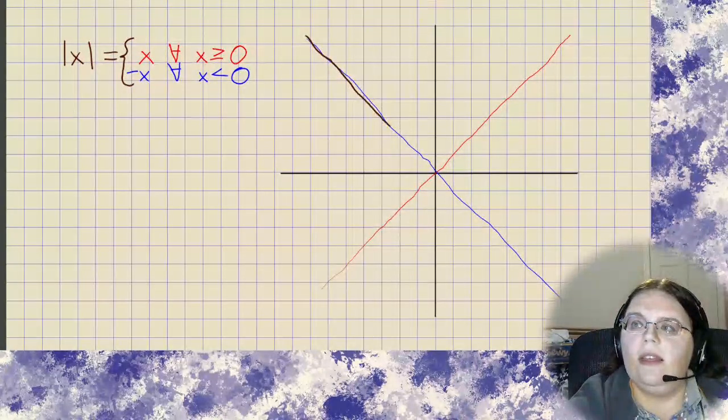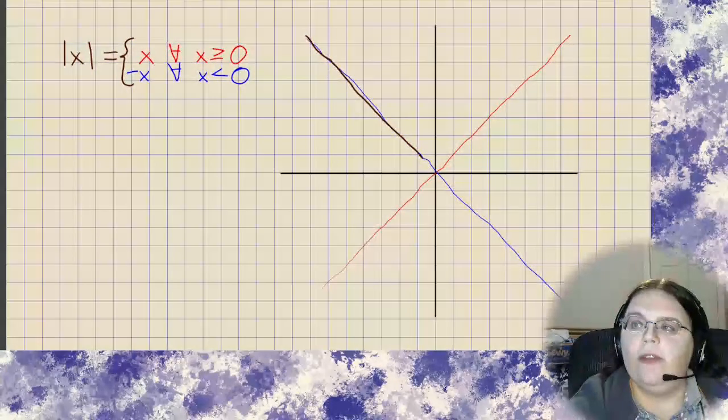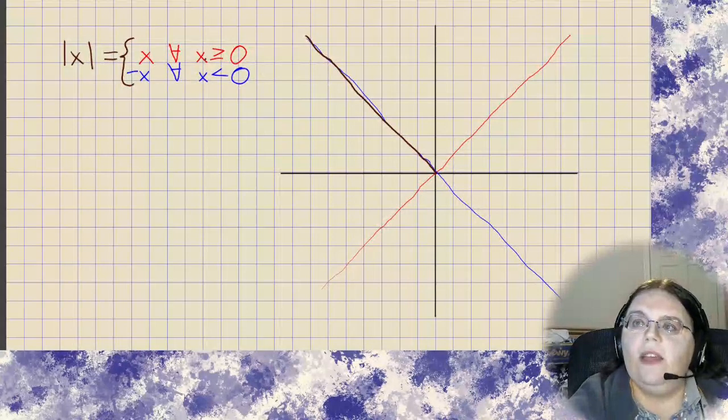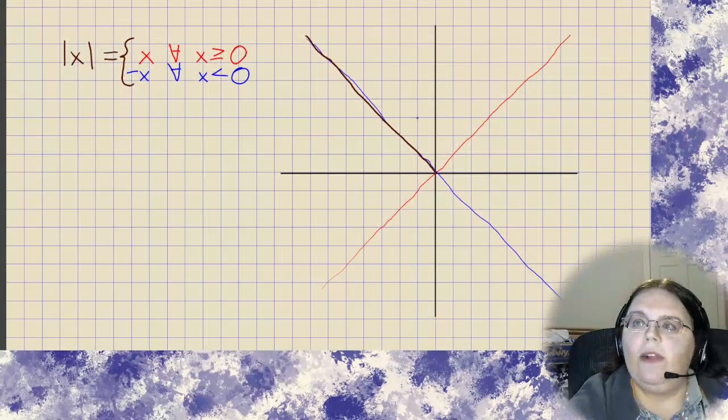And again allowing a little bit for variability of sketching. And then I see that we get to 0, so we need to change what we're doing. So when x is greater than or equal to 0, we follow the red line.